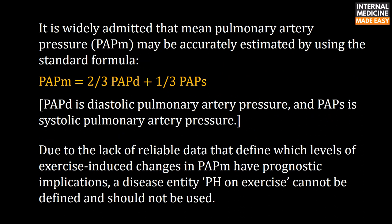It is widely accepted that mean pulmonary artery pressure may be accurately estimated using the standard formula: mean pressure equals two-thirds of diastolic pulmonary artery pressure plus one-third of systolic pulmonary artery pressure.